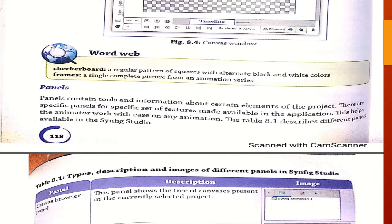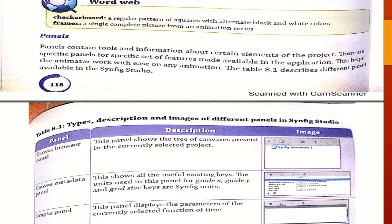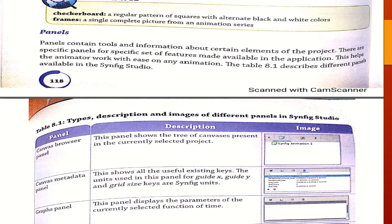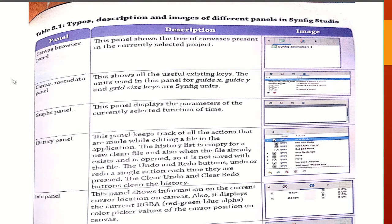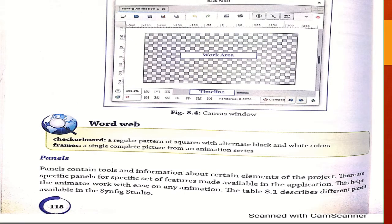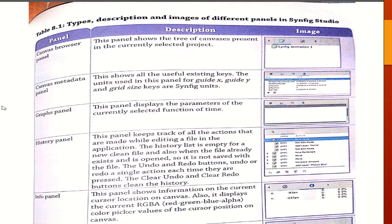Next are the panels. A panel contains tools and information about certain elements of the project, with specific panels offering specific sets of features. The first panel is the canvas browser, which shows the tree of canvases present in the currently selected project. The canvas metadata panel shows all the useful existing keys used in the panel — guide x, guide y, and grid size keys are system Synfix units used for the available grids.